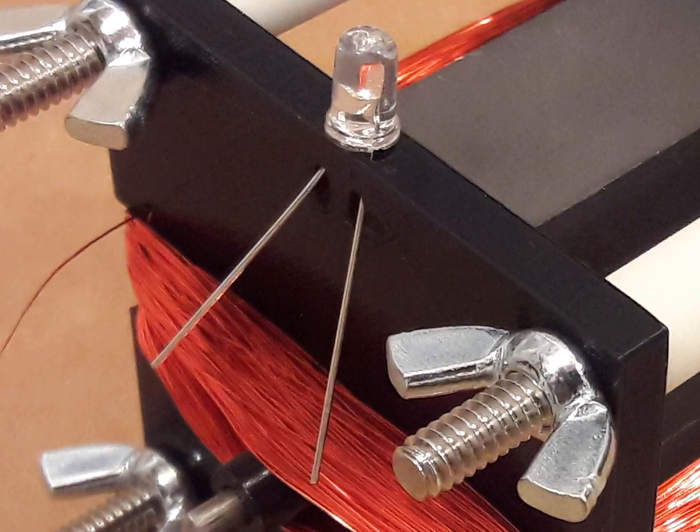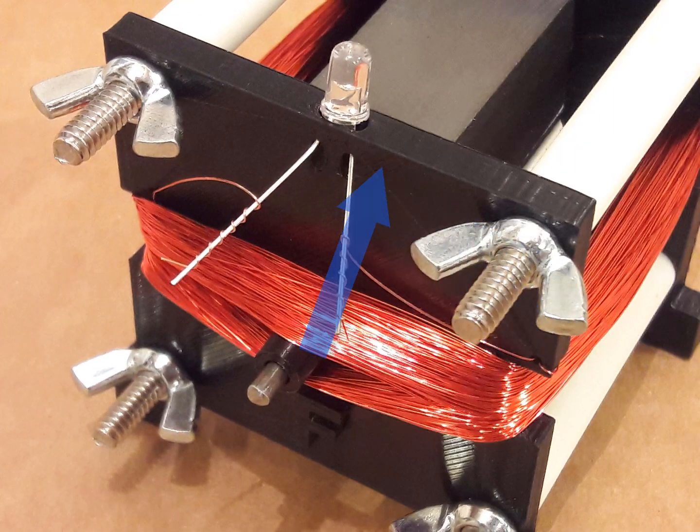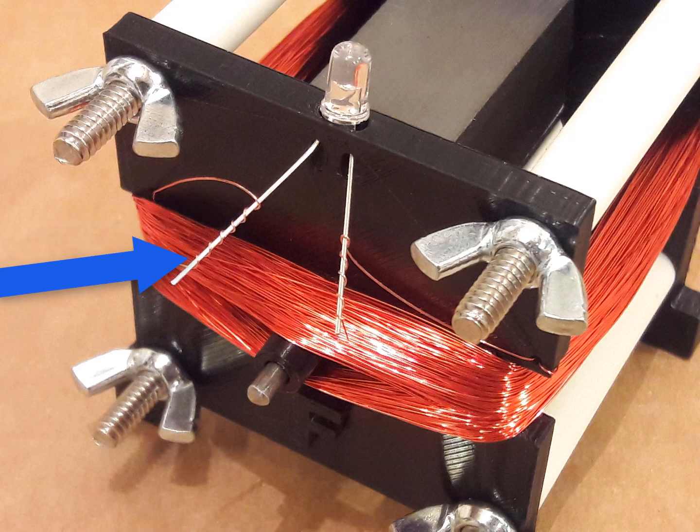Insert one LED prong into each of the two holes on the top edge of the front bracket. Gently bend the LED prongs out from the bracket. Wrap the left wire around the left LED prong and the right wire around the right LED prong. The magnet wire will twist around the LED prongs about six to twelve times.